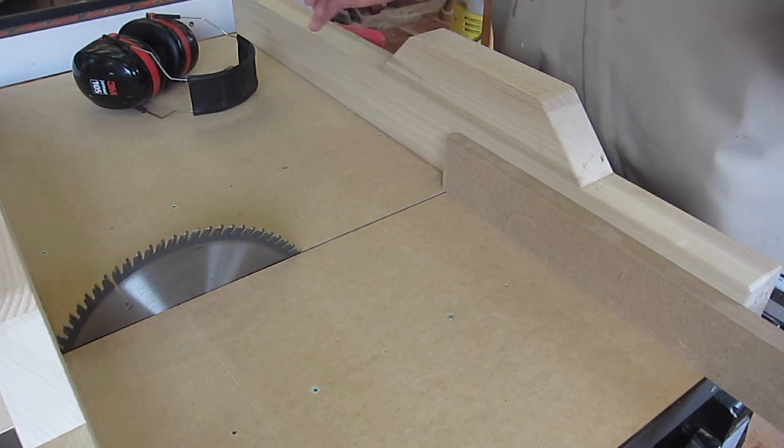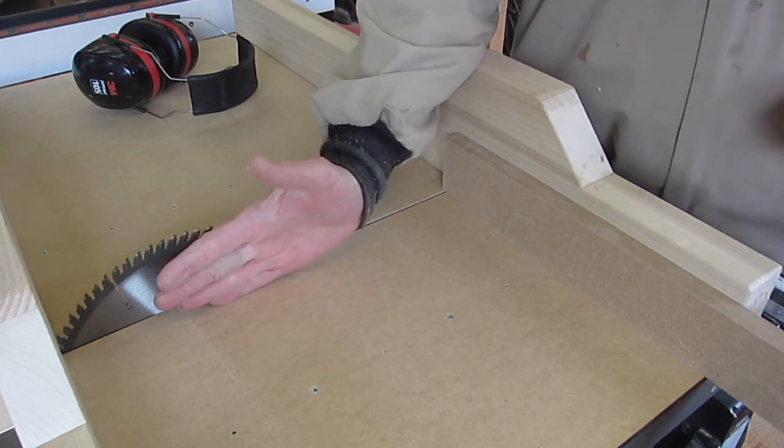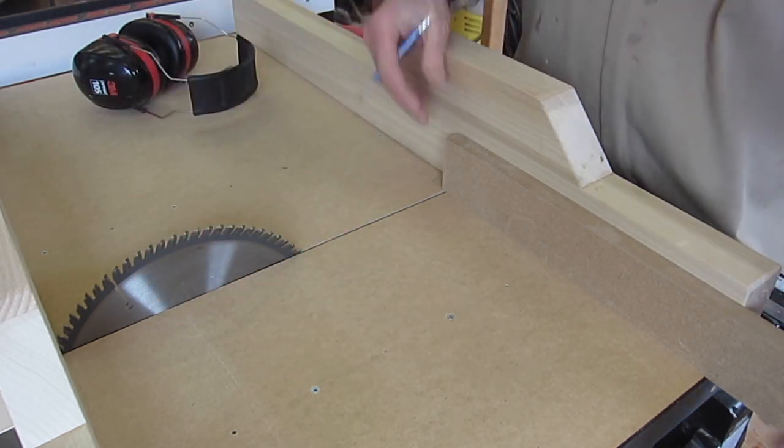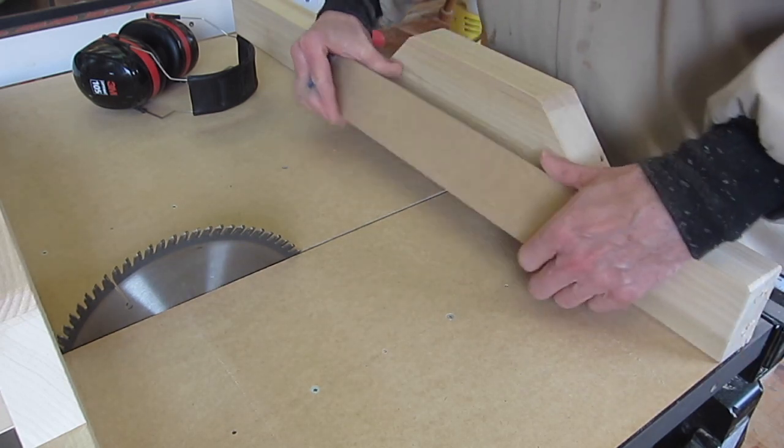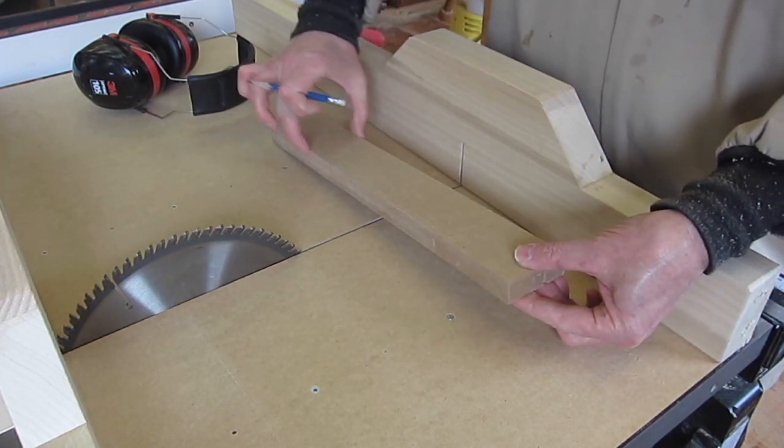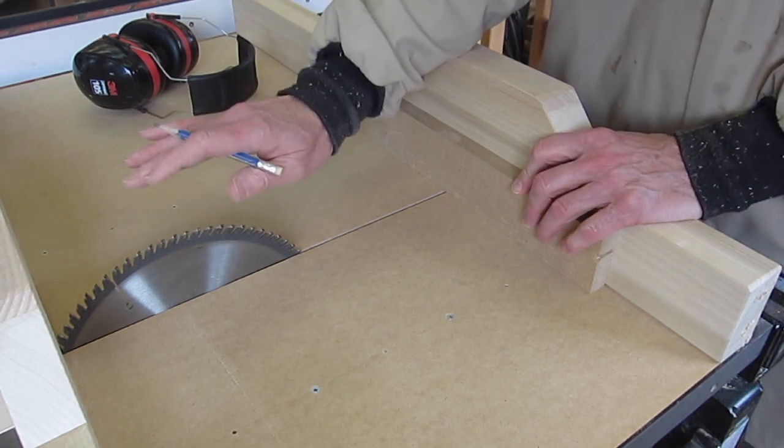An easy and effective way of checking that the blade is perpendicular to the table is to cut a board in half. And you need a board where the edges here are parallel.